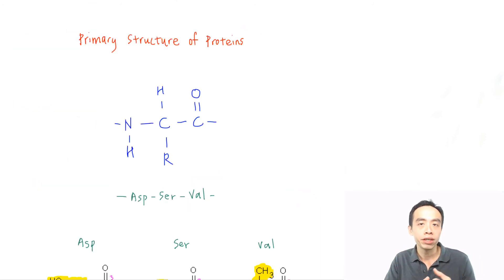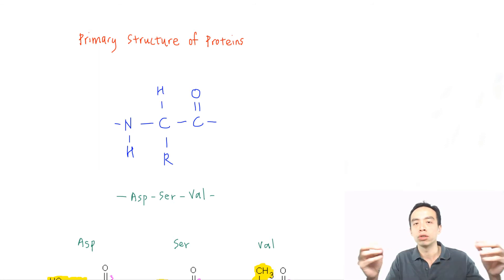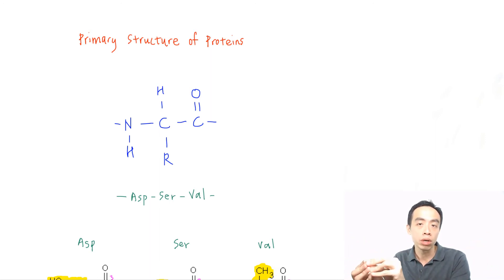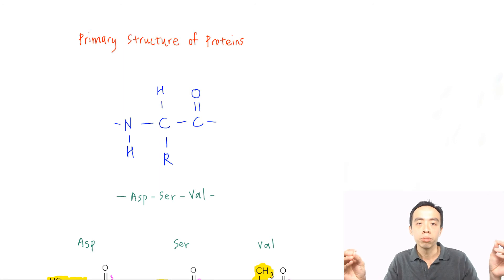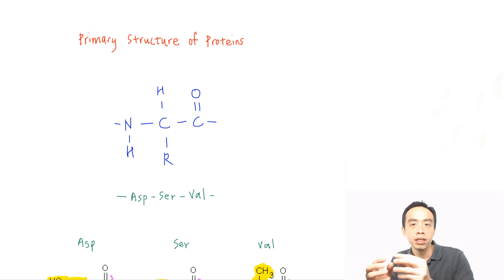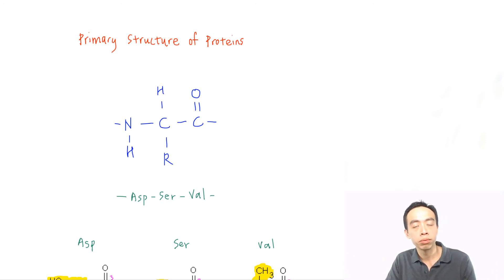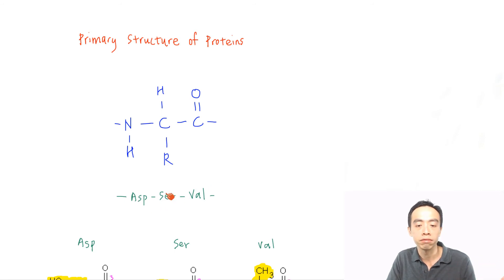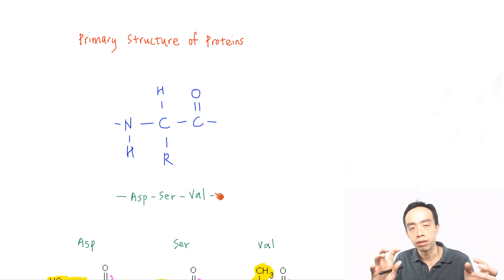The primary structure of proteins is the unique sequence of amino acids joined together by polypeptide bonds to form one continuous chain. All these amino acids link up forming peptide bonds, or amide bonds, creating a very long chain — that is the primary structure. The only difference between one protein and another is the sequence of amino acids, so a sequence like ASP-SER-VAL versus SER-VAL-ASP gives different properties and function.